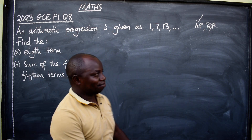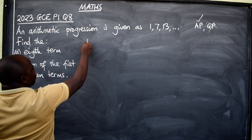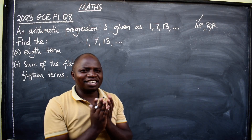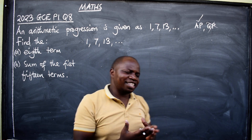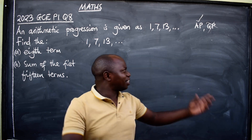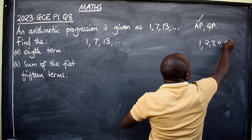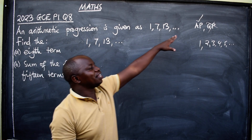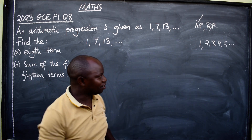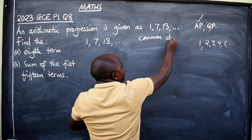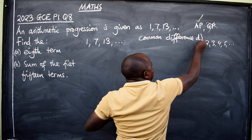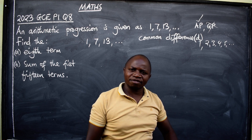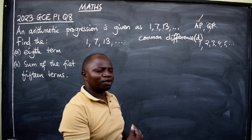The sequence we have been given is 1, 7, 13. There are certain things you need to understand under AP. How do you know that a sequence is AP? An AP sequence has what we call a common difference — we use the small letter d. For as long as a sequence has a common difference, then it is AP.